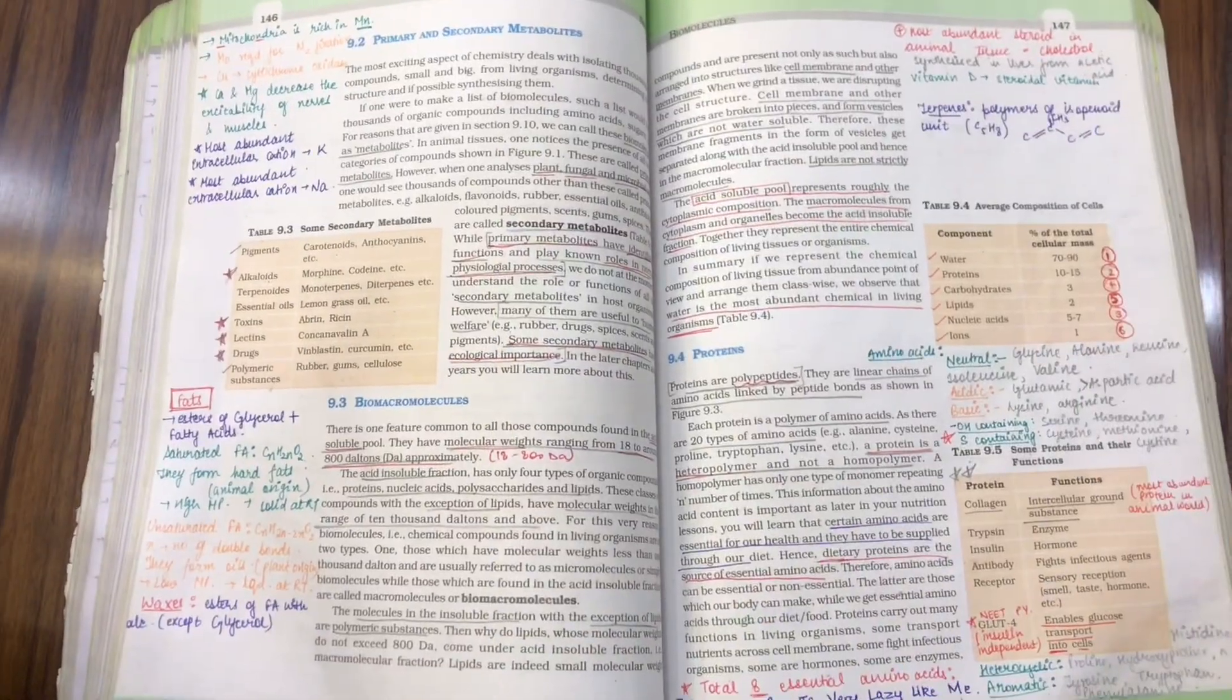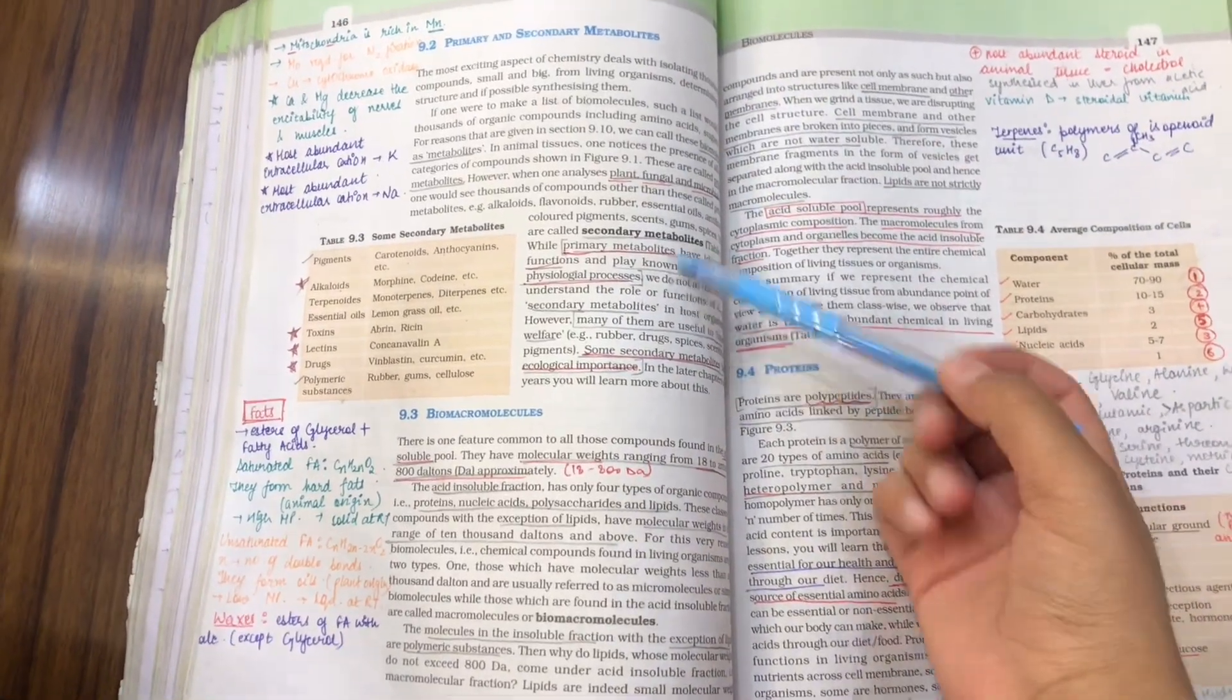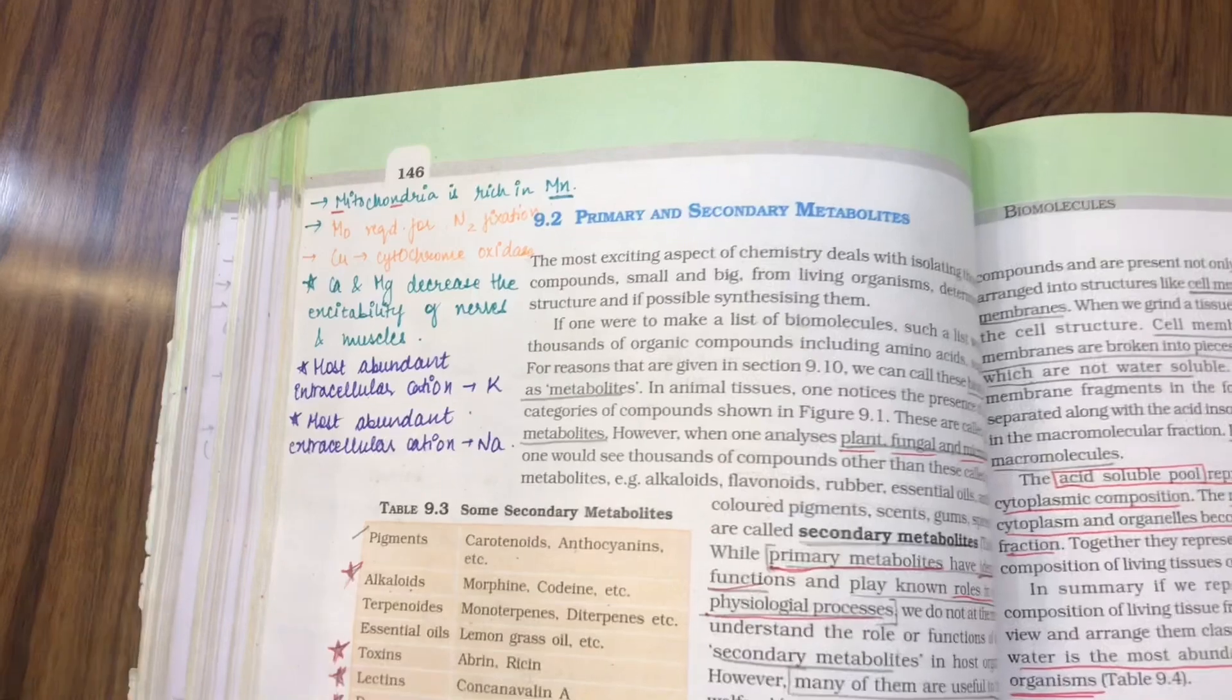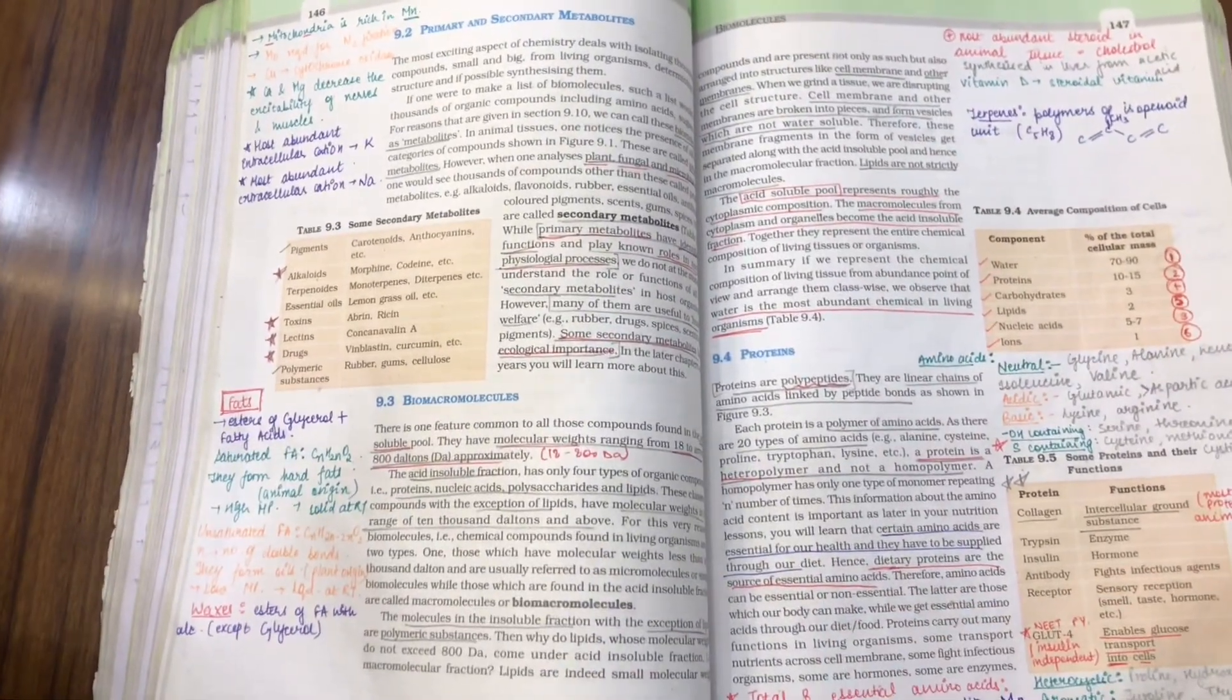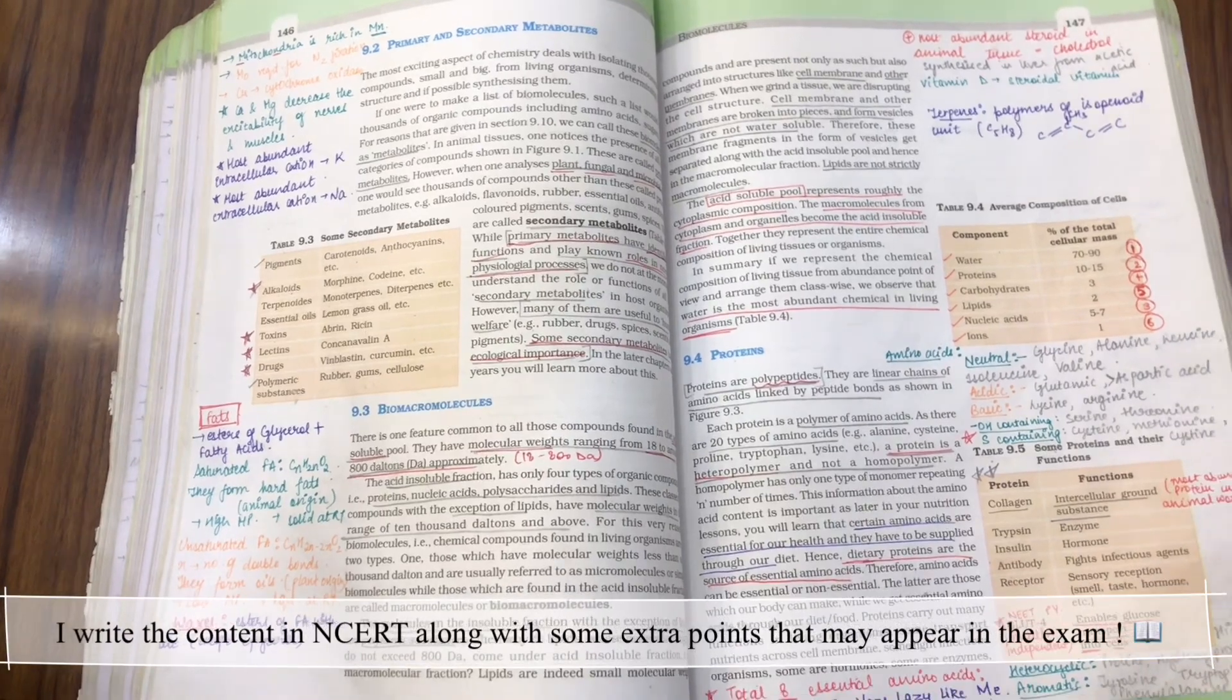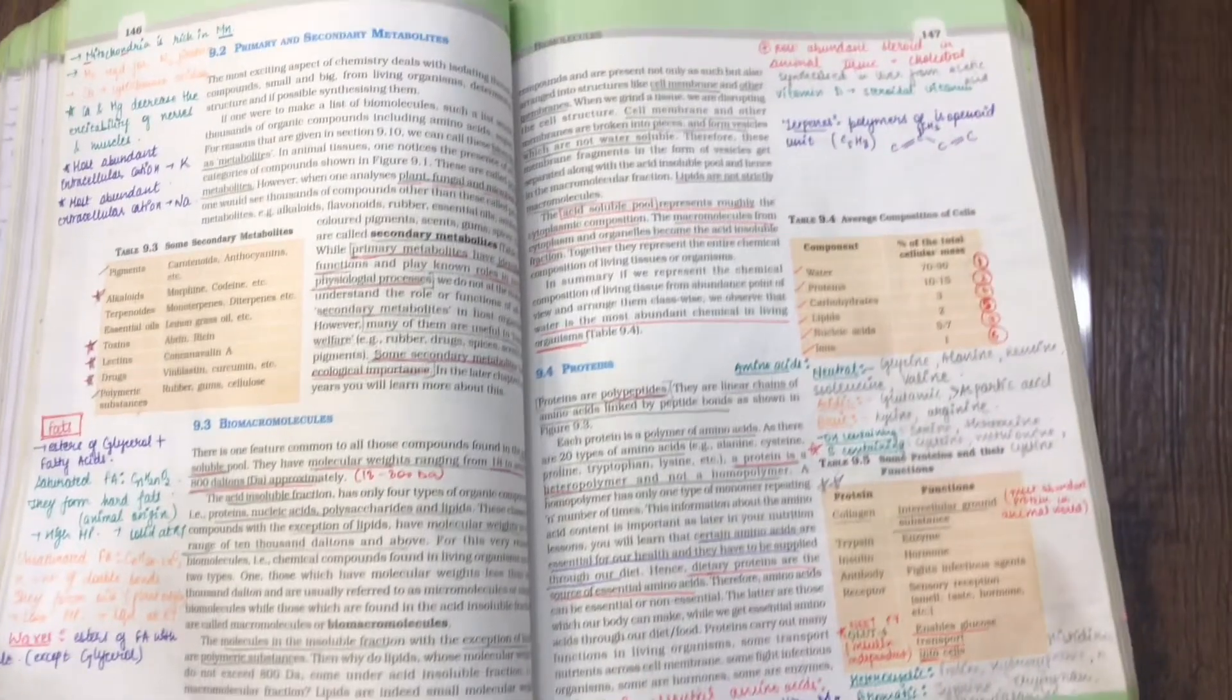This is another example of the chapter biomolecules. As you can see, I have just read the entire paragraph and have made short notes like what I find is important in this paragraph. Also, I read some reference books, so whatever I find is important and extra, I just write it down also.